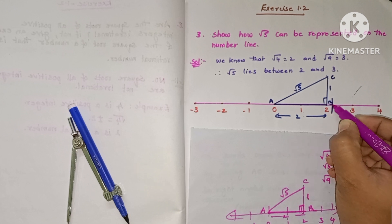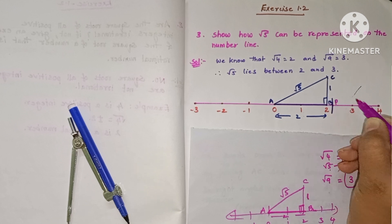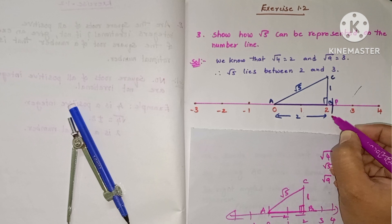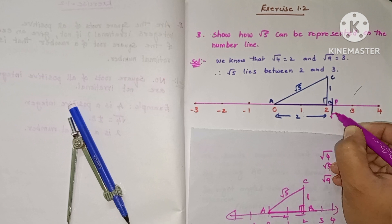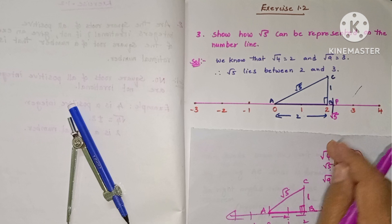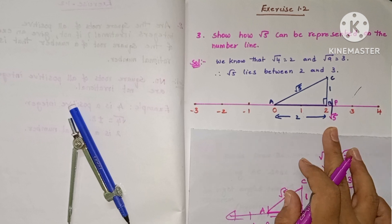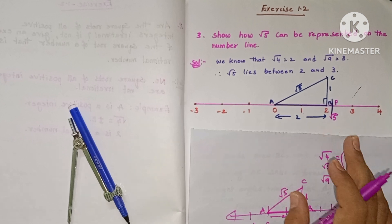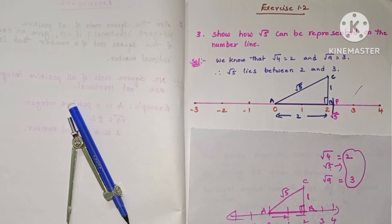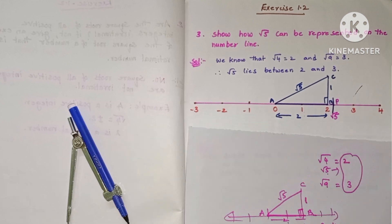The arc intersects the number line near 2 — root 5 is approximately 2.236, so it is very close to 2. This intersection point is called point P, and P represents root 5 on the number line.